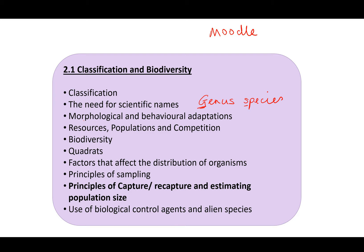We then go on to morphological adaptations — the physical adaptations that both animals and plants have, like the cacti, polar bear, and camel. You've also got behavioural adaptations, which can come up in the exam in a variety of formats. Then we've got resources that organisms need to survive, populations and competition, biodiversity, quadrats, the factors that affect the distribution of organisms, and principles of sampling.